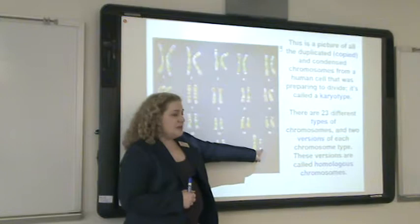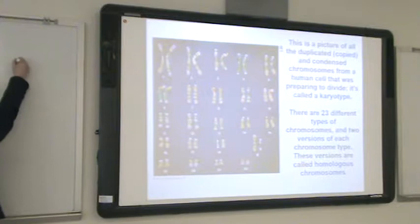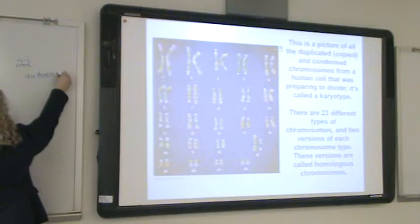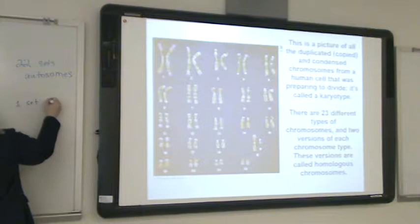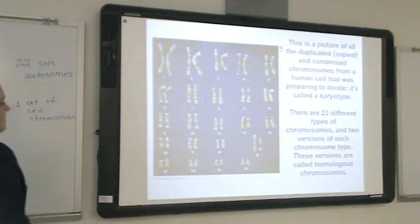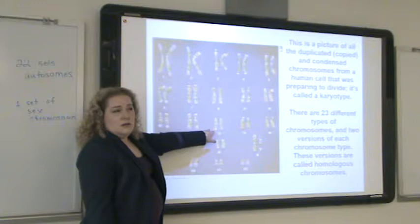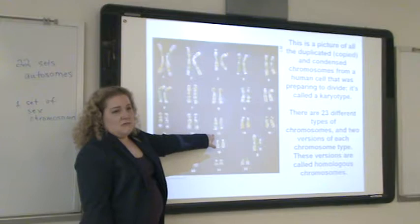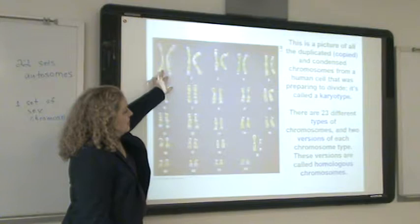We divide human chromosomes into 23 different types: 22 of them are called autosomes, and then one set of sex chromosomes — X and Y if you're male, X and X if you're female. Chromosomes are arranged by length from 1 to 22, with chromosome 1 being the longest and chromosome 22 the shortest.